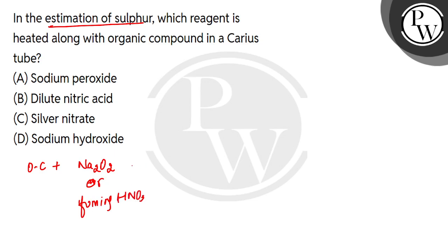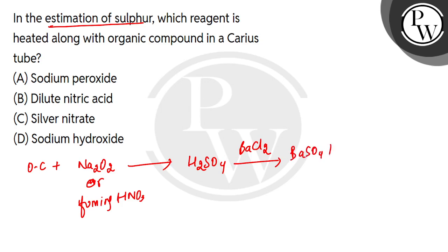What will happen? The sulfur in the organic compound will be converted into sulfuric acid. We then treat this sulfuric acid with barium chloride solution, which gives a precipitate of BaSO4. We wash, dry, and weigh this precipitate to find out the quantity of sulfur.